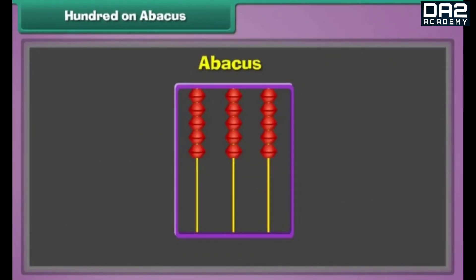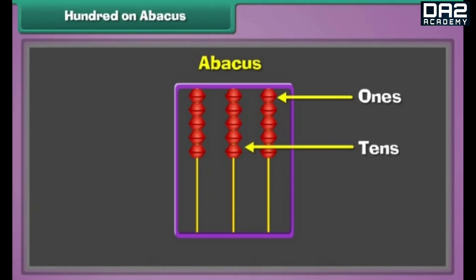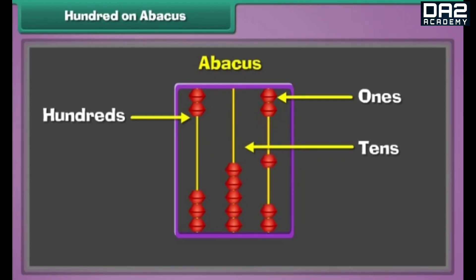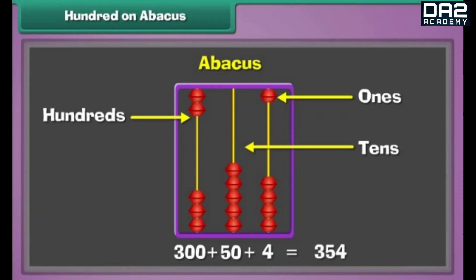Hundred on the abacus. Look at this abacus. It has three strings, and each string represents a position. The rightmost string represents the ones place, the next represents the tens place, and the leftmost represents the hundreds place. The beads in each string represent the value at each position. There are three beads in the hundreds string, five in the tens string, and four in the ones string. The number represented by the abacus is 300 plus 50 plus 4, which equals 354.